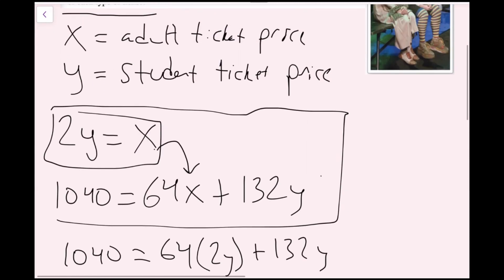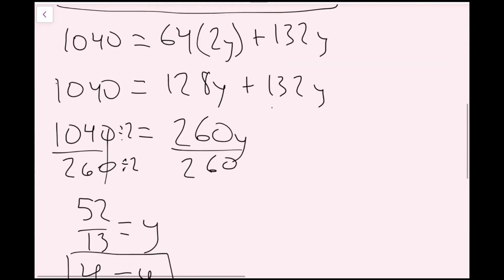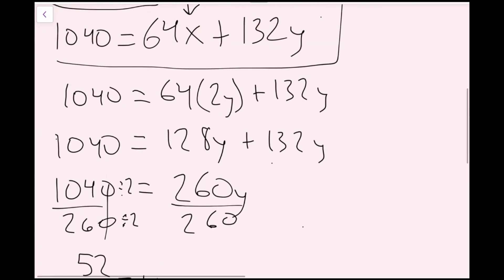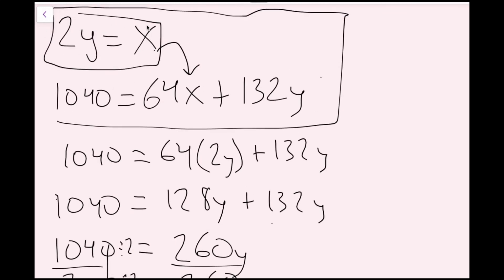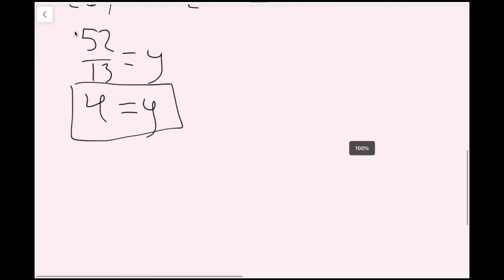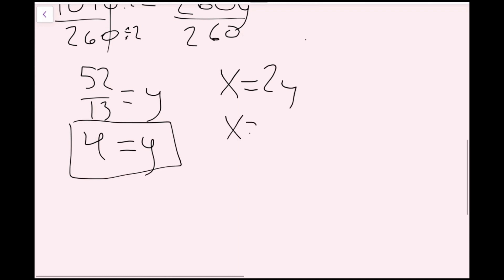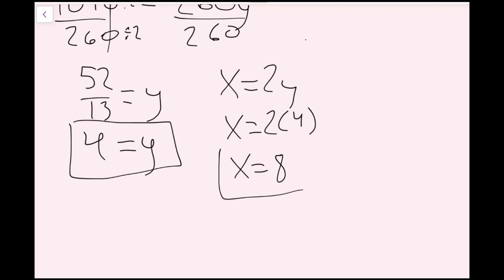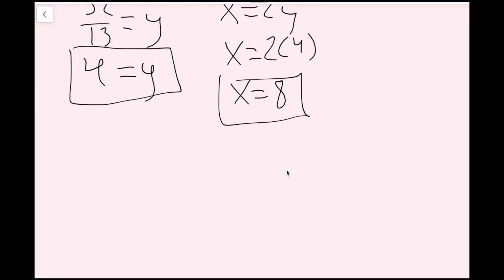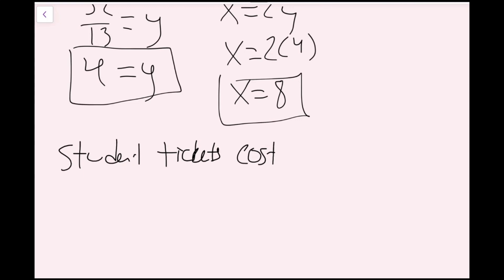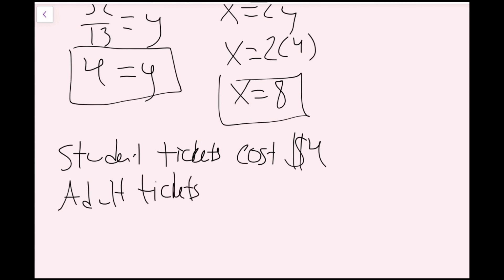Remember, y is the student ticket price, so the student ticket price is $4. The adult ticket price x equals 2y, so x equals 2 times 4, which is $8. Since we're dealing with a word problem, we write a word answer: student tickets cost $4 and adult tickets cost $8.